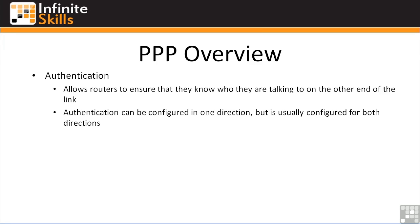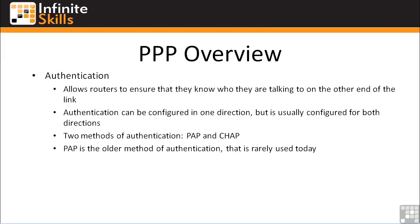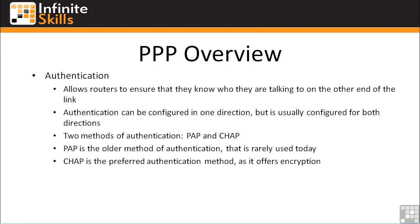Authentication can be configured in just one direction — I dial you up and provide a username and password, and you authenticate it. But when authentication is set up on a dedicated link, it's usually configured in both directions so you authenticate both ends before sending potentially sensitive data across the link. There are two methods of authentication: PAP and CHAP. PAP is the Password Authentication Protocol — an older method rarely used today. CHAP is the Challenge Handshake Authentication Protocol, and it's the preferred method as it offers encryption. We've got another video just on PPP authentication where we'll go more in-depth on the differences between PAP and CHAP.